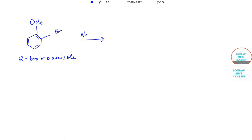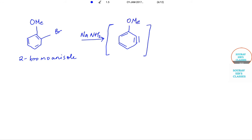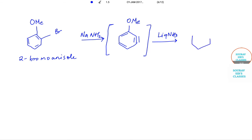Then NaNH2 is added and it gets transformed — the diagrammatic representation shows the benzyne intermediate with OMe, and with liquid NH3 (liq. NH3) it gives a product with OMe and NH2.